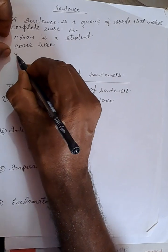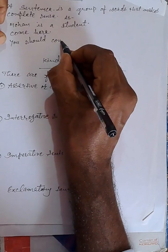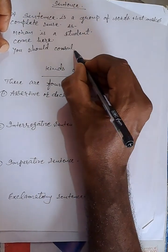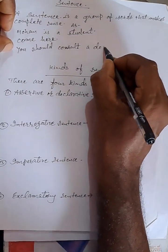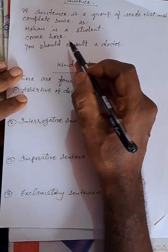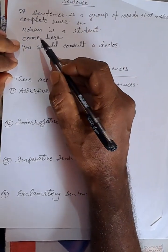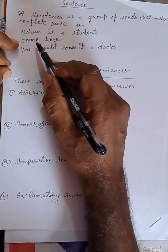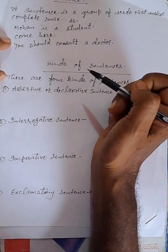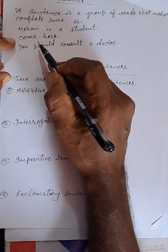You should consult a doctor. Here, 'Mohan is a student' — in this sentence it is a declaration and the speaker says something. Similarly, 'Come here' — this is also a sentence because here a command is stated.